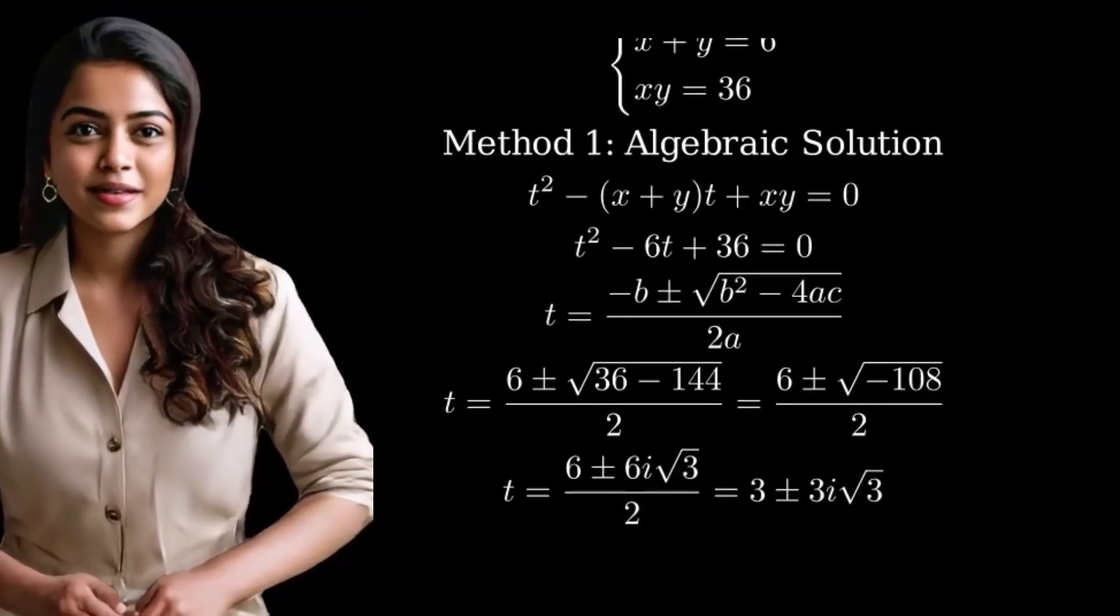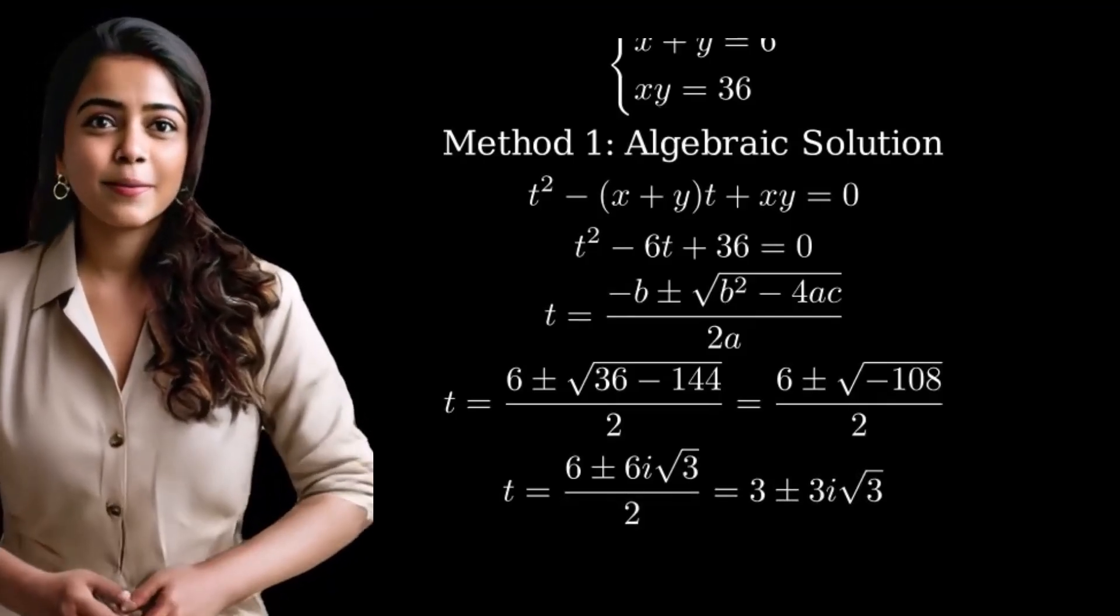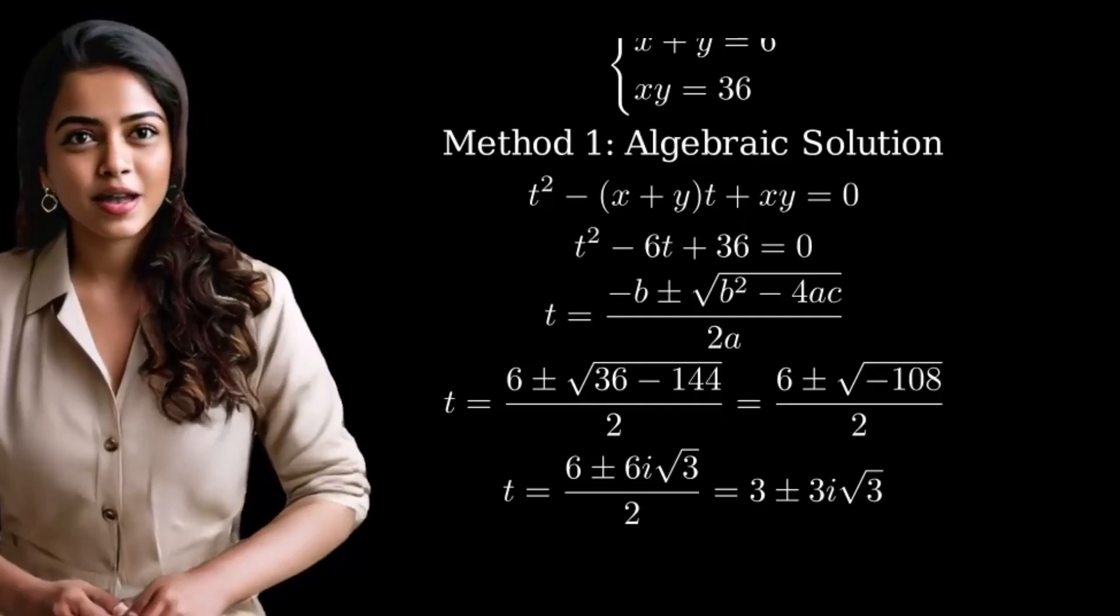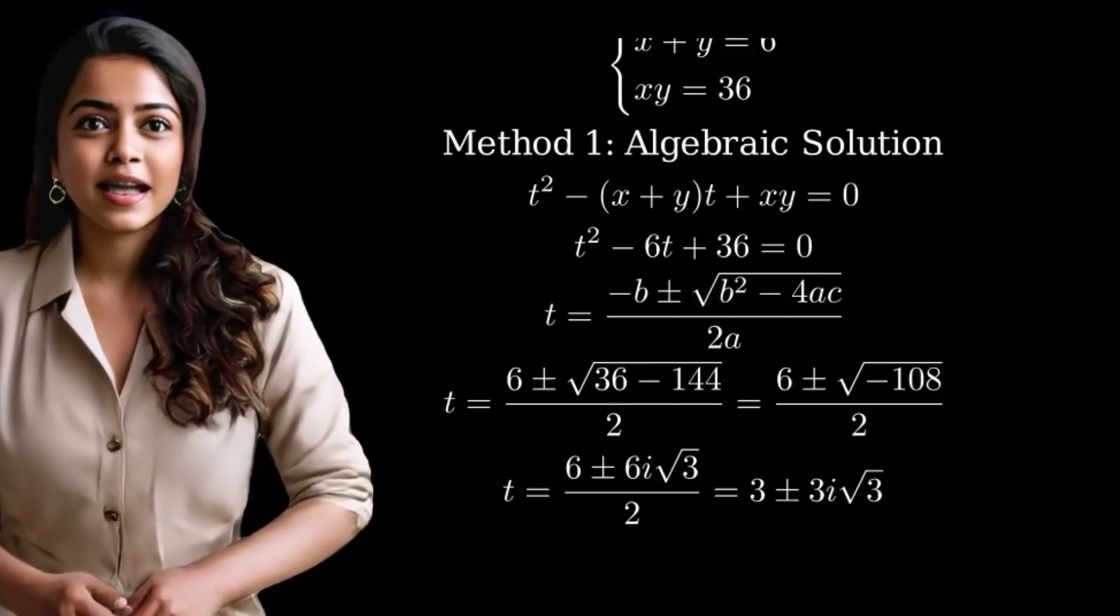Simplifying the square root of negative 108, we get 6 plus or minus 6i root 3 all over 2, which simplifies to 3 plus or minus 3i root 3.